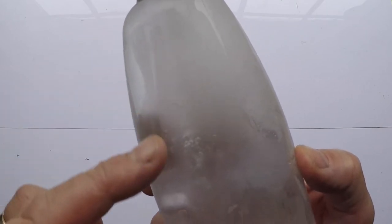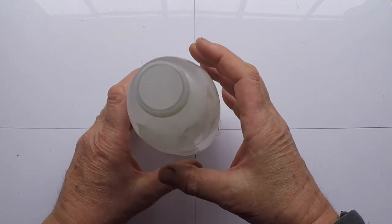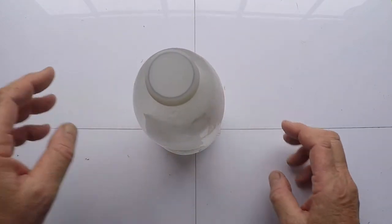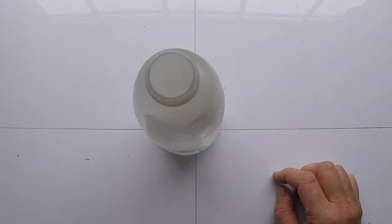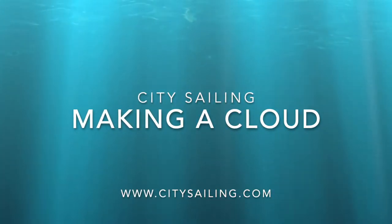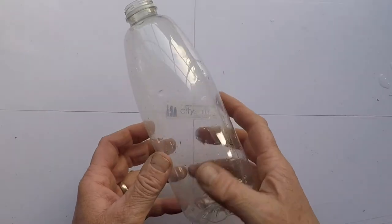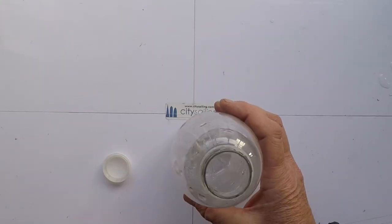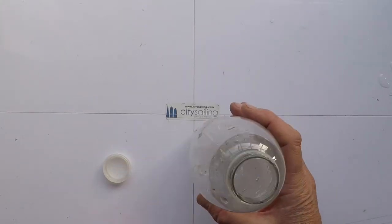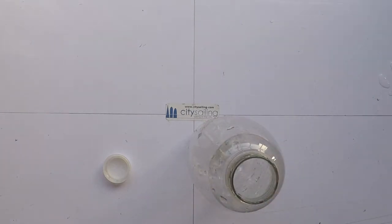This happens when air masses meet. So when warm air and cold air meet we get condensation and it sticks on particles and forms clouds. Next, we're going to make our very own cloud. So what I've done is taken the bottle again, a little bit of water inside, giving it a shake so it's moist inside.